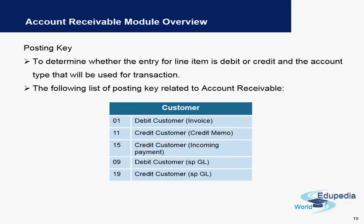There are specific posting keys for customers — the ones we commonly use are 01, which is to debit a customer, and 19, which is to credit a customer, or 11, which is to credit a customer for credit memos. Payments also have their respective posting keys.